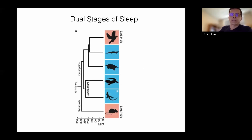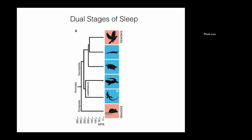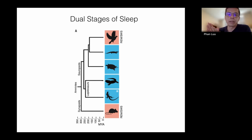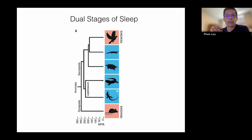These dual stages of sleep can be seen in amniotes — including avians, birds, reptiles, and mammals. You can also observe this in invertebrates like the octopus. So the mechanisms regulating these two stages of sleep are quite ancient.